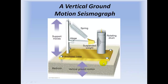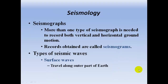Here we have our seismograph — it's anchored to some bedrock. We have a stationary pen and a rotating drum. If the ground should shake, the drum is going to move relative to the pen and it's going to mark the wavelength and the wave heights.